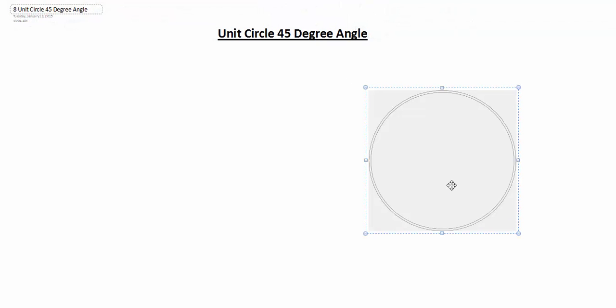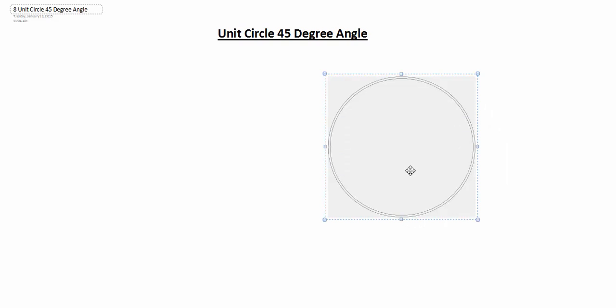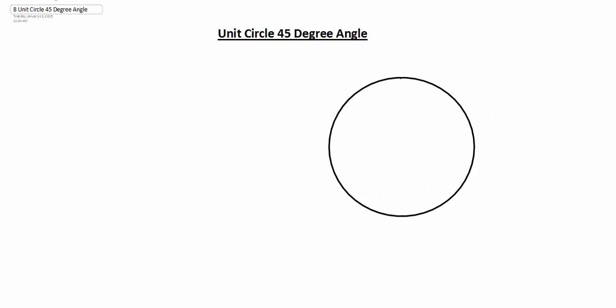The unit circle is simply a circle that has a radius of one unit. Because this is called the unit circle and it has a radius of one unit, we're going to go out here — this point on the x-axis would be (1, 0), because we're going out one unit on the x and we're not going up or down for the y. So this is giving us our x and y coordinate.